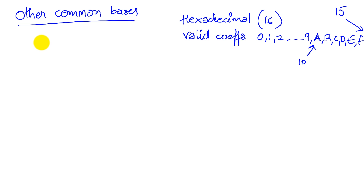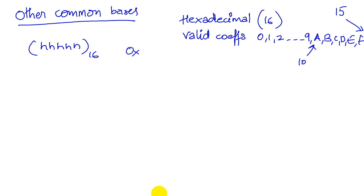For example, we might write some number in hexadecimal — a five-digit hexadecimal number. Sometimes, because we may not have the luxury of representing a subscript on a machine, we use a more convenient alternative: we prefix the number with 0x. So this is a five-digit hexadecimal number.